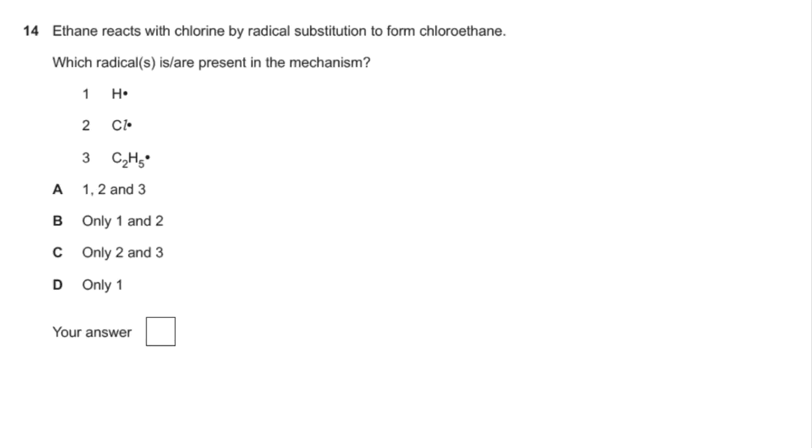Number 14, so this one's testing our knowledge of the radical substitution mechanism. So I'm just going to go through the mechanism for ethane with chlorine. So there's the initiation step, there's the first propagation step, there's the second one. And obviously termination is just you combine any of the radicals that have already been made. So which radicals have we got? We've got the chlorine radical and the ethyl radical. H radicals aren't part of this, so the answer was C.